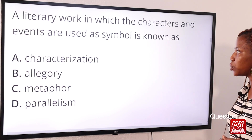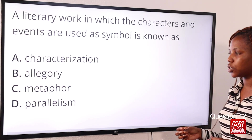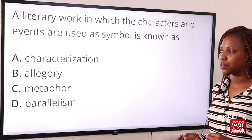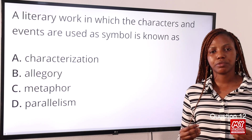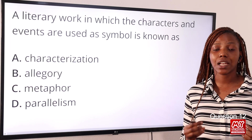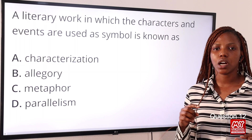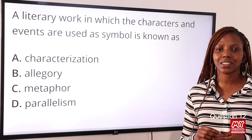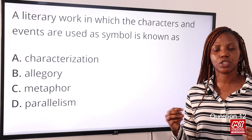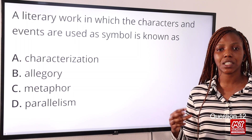Question twelve: a literary work in which characters and events are used as symbols is known as Option A: characterization, Option B: allegory, Option C: metaphor, Option D: parallelism. Allegory uses symbols — characters, events, paintings, settings — to deliver a broader message or represent a broader concept. The answer is Option B: allegory.